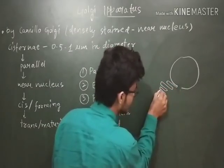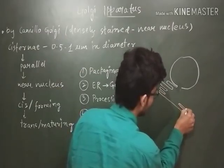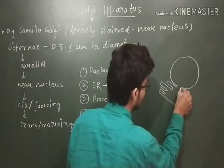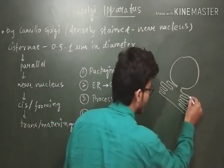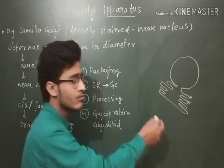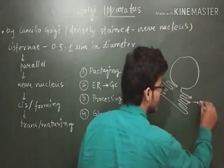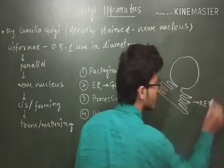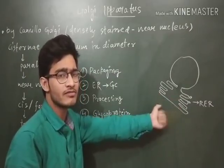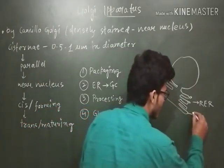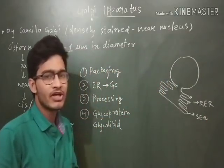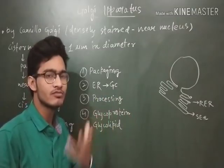The endoplasmic reticulum is directly connected with the outer nuclear membrane. It can be embedded with ribosomes, and if ribosomes are present on the endoplasmic reticulum it is known as RER, because the ribosomes give a rough appearance — so it is rough endoplasmic reticulum. If ribosomes are not present it is called SER, that is smooth endoplasmic reticulum, because without ribosomes the appearance will be smooth.